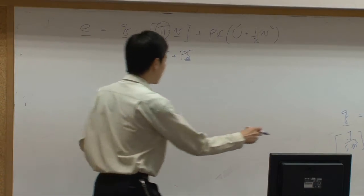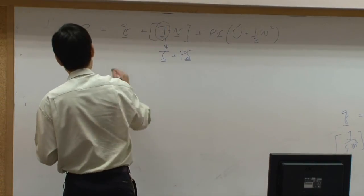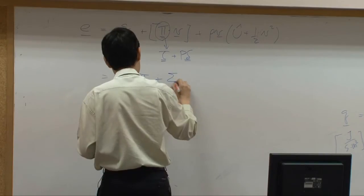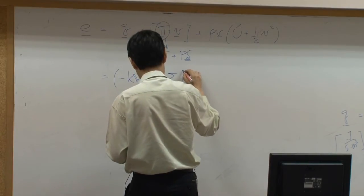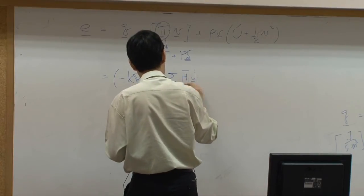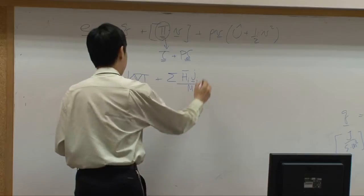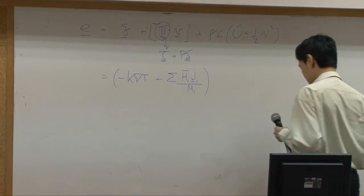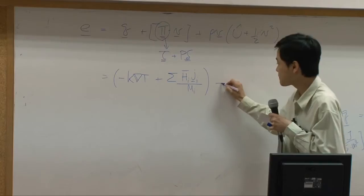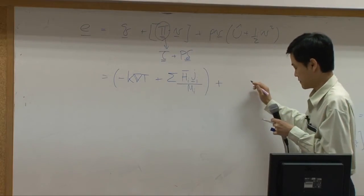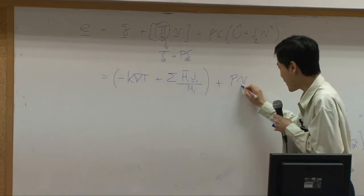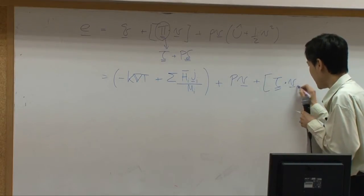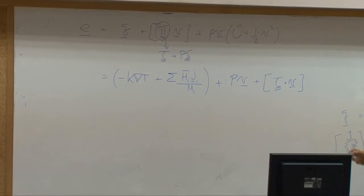So if I take this equation plug it back here you will have minus k del t plus summation of h_i times j_i over m_i. Then this term, you have pressure times velocity and tau dot v. The rest will be the same.